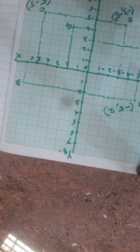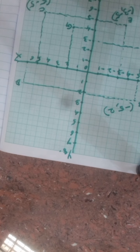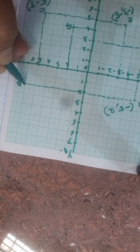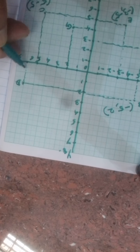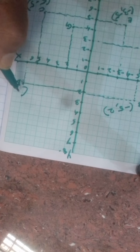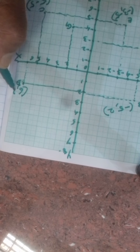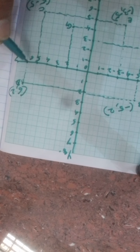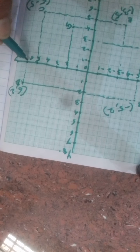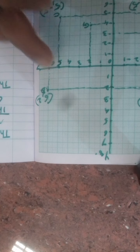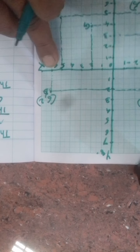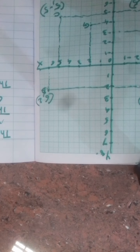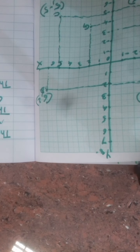The fifth question: what is the abscissa of point D? Abscissa means the x-coordinate. Point D is here on the figure. The x-coordinate of D is 6 — the actual coordinates are 6 comma 2. So the abscissa of D is 6.